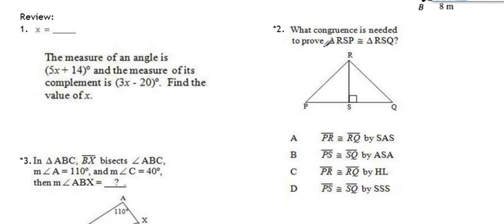Number two on the review. What congruence is needed to prove RSP is congruent to RSQ? We already know this is congruent. So we don't have enough information to be able to say side, side, side. So it can't be D. For A, PR congruent to RQ. That's not side, angle, side. That's angle, side, side. There is no angle, side, side in geometry. So it's not A.